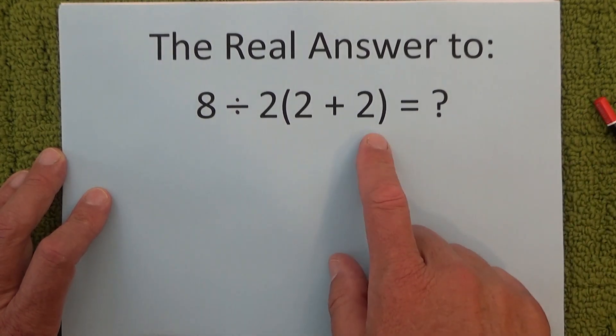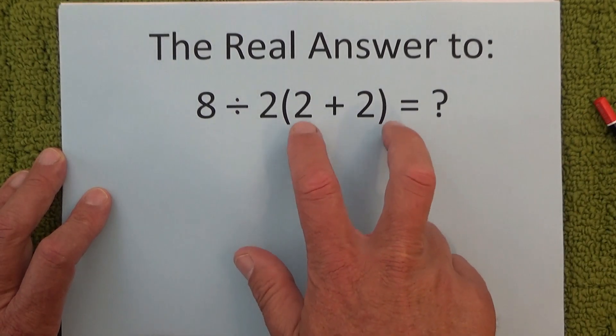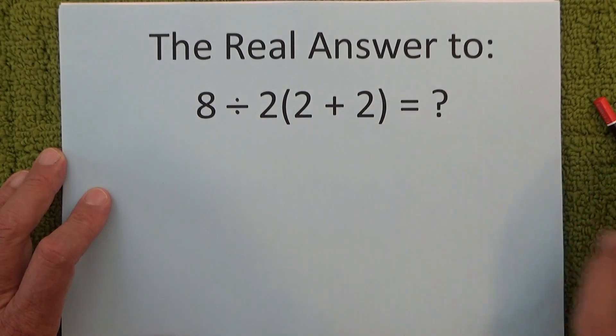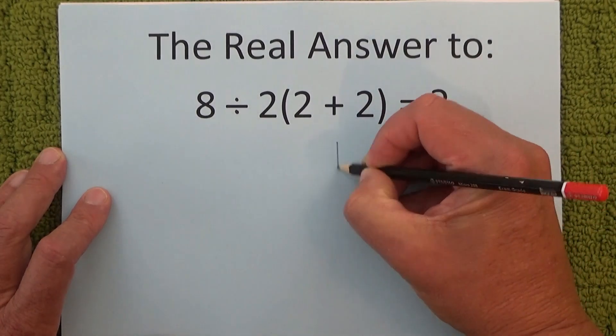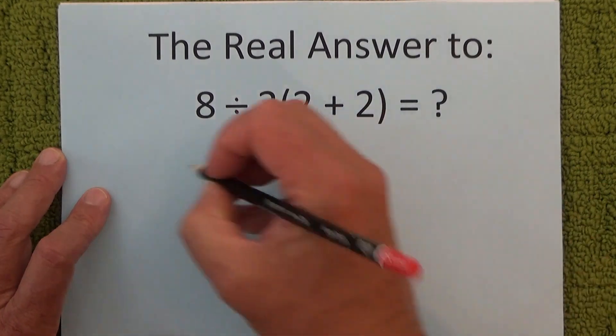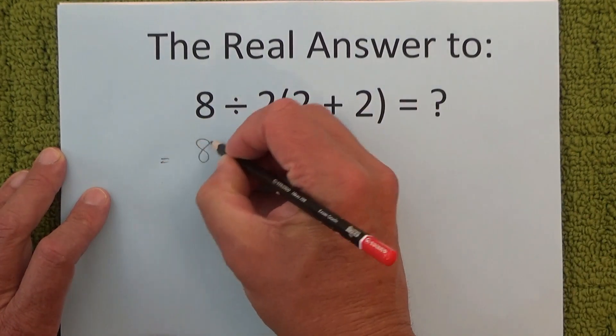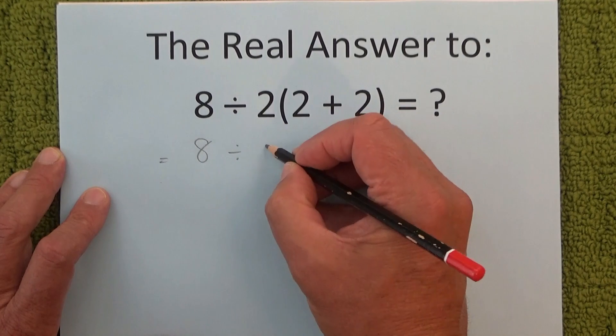So with any of these equations you've got to do whatever is in brackets first. So you do the 2 plus 2 first which is 4 and then it's still 8 divided by 2.